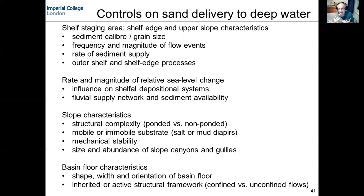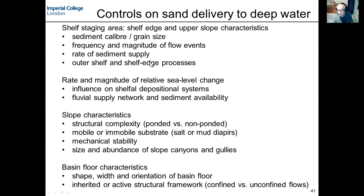This text is just a list of the features I've just talked about. We need to think about the shelf — sometimes referred to as the staging area, because that's where we store up sediment that we will at some later point release into deep water. Key considerations include grain size, the frequency and magnitude of flow events, which we can relate to the triggers that cause those gravity flows, sediment supply, and also processes at the outer shelf and shelf edge — whether waves or tides are important and how they affect delivery of sediment to the basin floor.